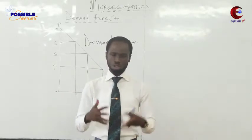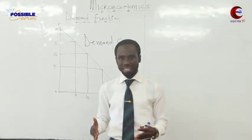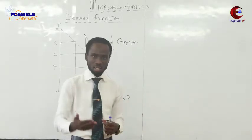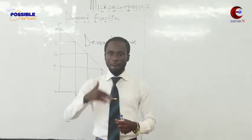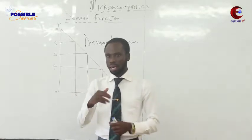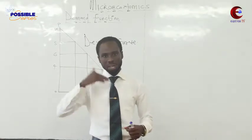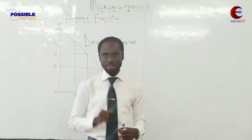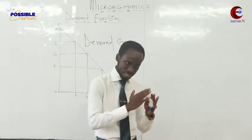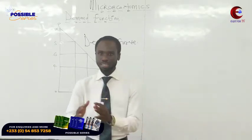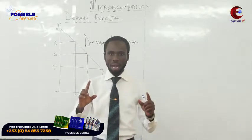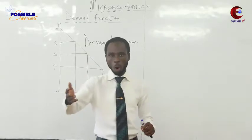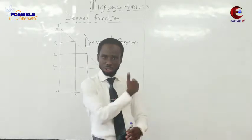Your model must agree with your theory. Today we are going to do the mathematical representation, which is the last component of the model. We have been focusing on individual demand. When we talk about individual demand we are talking about one consumer. When we talk about market demand we are talking about a group of consumers — probably two or more.